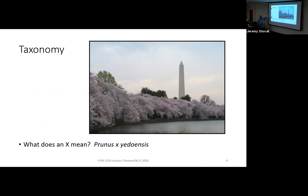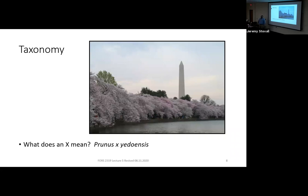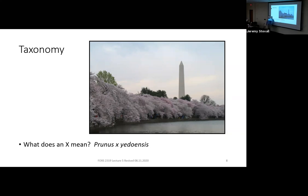Sometimes you'll see an X in a scientific name — for example, Prunus × yedoensis. The cherry trees by the Washington Monument are Yoshino cherries given to the U.S. by Japan as a gift. Yoshino cherry is a hybrid cherry. The X means they took two different members of the Prunus genus and hybridized them, and because this hybrid became so common, they decided to name it. The X lets you know it's not a standalone species — it's a hybrid of two other species.